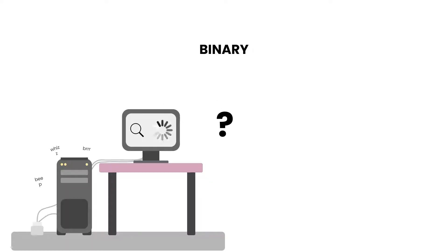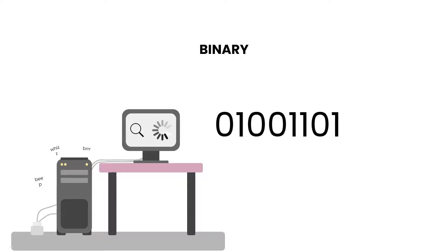What about a computer? Seeing as they don't have any fingers, it might be easier for them to represent numbers in a different way. Binary numbers, which are base 2, only use two characters for each digit — either a 0 or a 1 — which can be represented with a high or low current, and much like base 10, we can combine these to make any number.